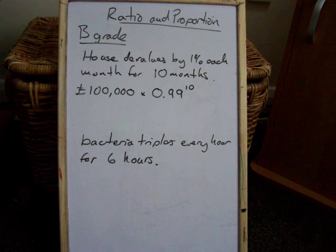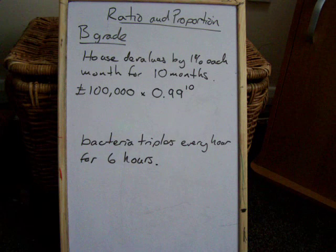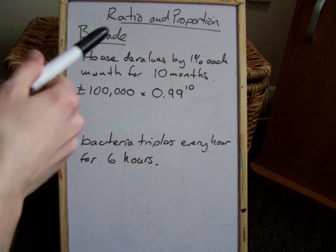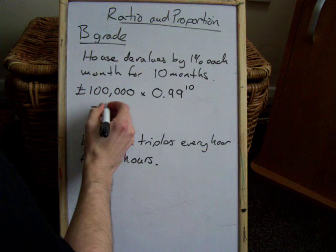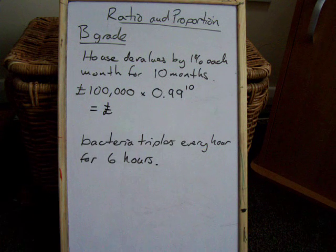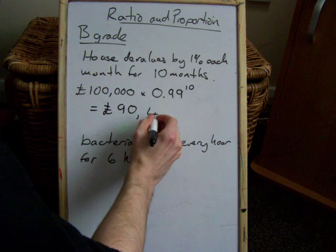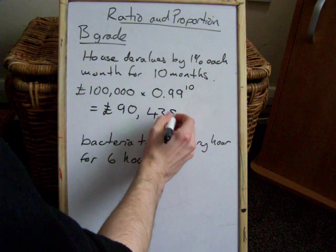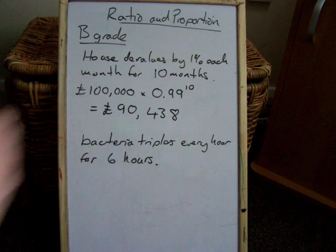This is going to be a calculator question, so that's 100,000 multiplied by 0.99 to the power of 10. If it was devaluing by 1% each month and you thought it was 10% off, you would think this is going to be £90,000. But it's actually going to be £90,438 and some pennies — so it's not 90,000, it's slightly less than that.